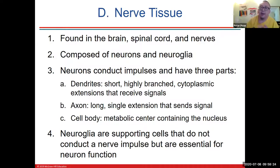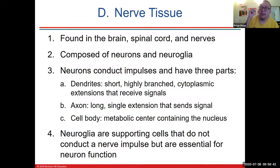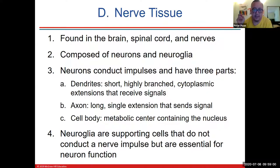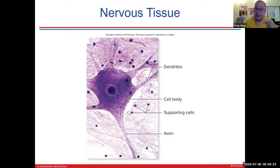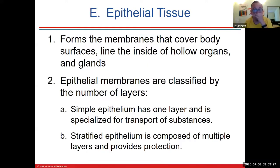Nervous tissue is found in the brain, spinal cord, and nerves. It's made of two things: neurons and neural glia. Neurons conduct impulses — they send electrical signals — but they're very bad at everything else. Neurons literally cannot feed themselves, so they need neural glia to support, protect, and feed them. A neuron has a cell body, a long axon, and dendrites. Dendrites receive information; the axon sends out information.